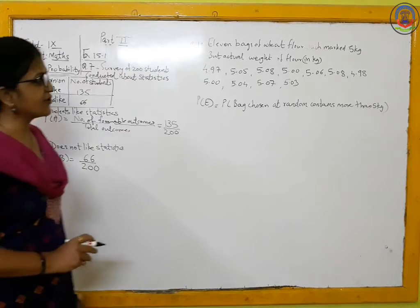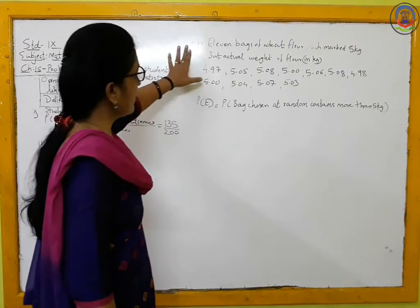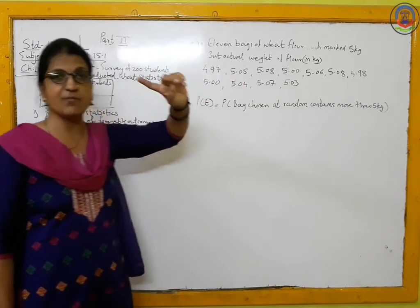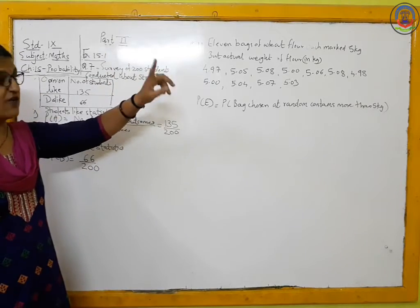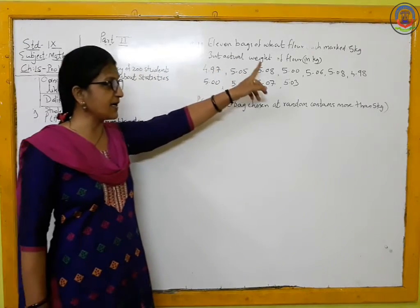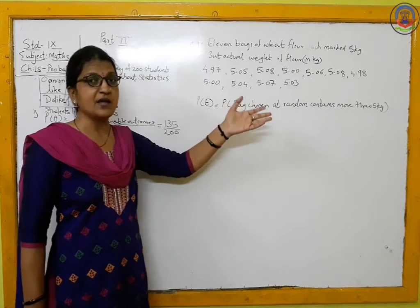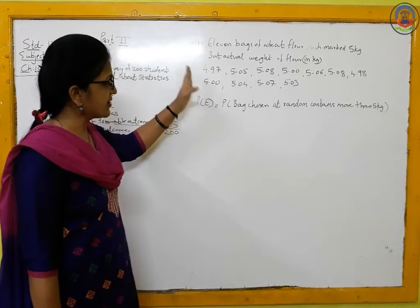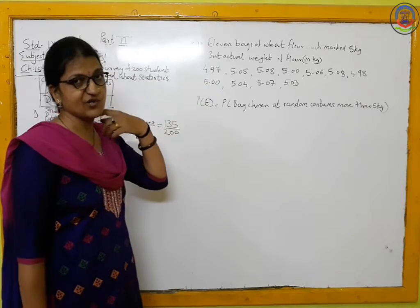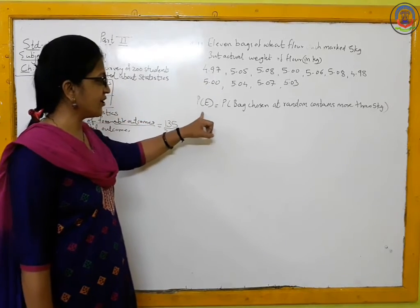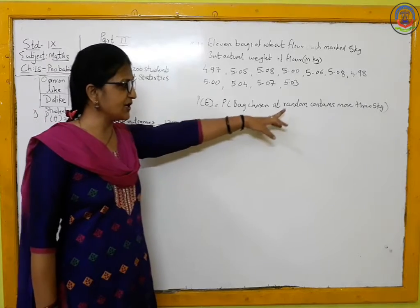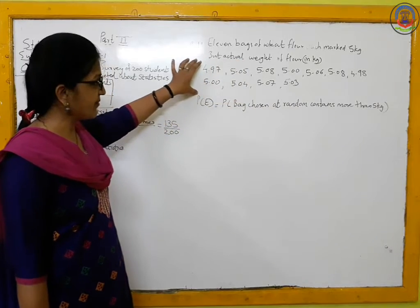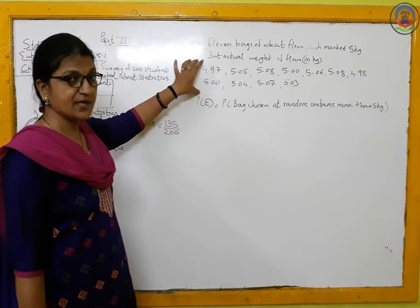Question number 1: eleven bags of flour, each marked 5 kg. But the actual weight of the flour in each bag may be less than, more than, or equal to 5 kg. The data for these 11 observations is given. We have to find the probability of the event where a bag chosen at random contains more than 5 kg. The total number of outcomes is 11.